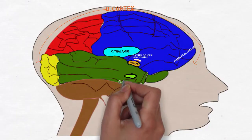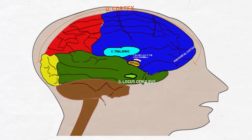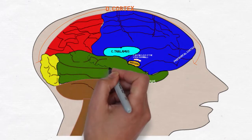The locus ceruleus receives signals from the amygdala and initiates the classic anxiety response: rapid heartbeat, increased blood pressure, sweating and pupil dilation.